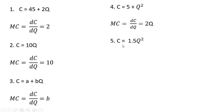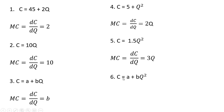Another example. Bring that exponent down in front, so it's 2 times 1.5, which is 3. Subtract 1 from that exponent, leaving us with a marginal cost of 3q. And in general, if you have a cost equation that looks like this, marginal cost will equal 2 times b times q.